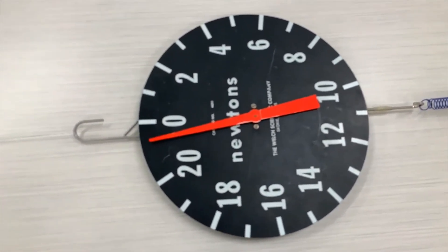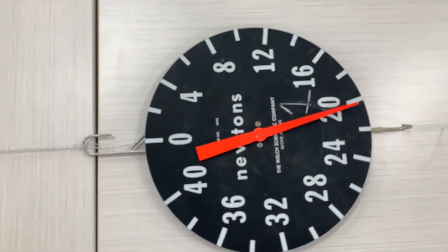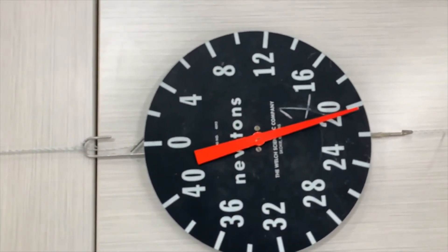How much should be in the next one? So this is tension now in the middle of the spring. Again, it's just over 20 newtons. So it's somewhere, it's a little less than 21.